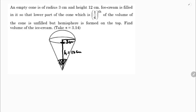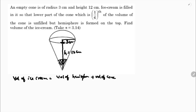To calculate the volume of ice cream, first take the volume of the hemisphere, then take the cone volume and subtract one-sixth of the volume of the cone. So: volume of ice cream = volume of hemisphere plus volume of cone minus one-sixth of volume of cone.